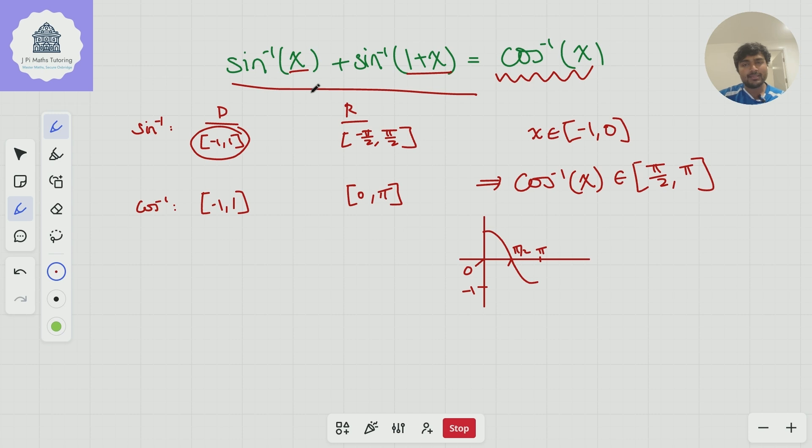But if we come back to this thing, this left-hand side, we've said that x is between minus 1 and 0. Now, inverse sine of x, if x is between minus 1 and 0, inverse sine of x, again, you could draw a graph of sine to verify this, but this must be between minus pi over 2 and 0. And inverse sine of 1 plus x, well, 1 plus x is going to be at least 0, between 0 and 1, in fact. This is going to be somewhere between 0 and pi by 2.